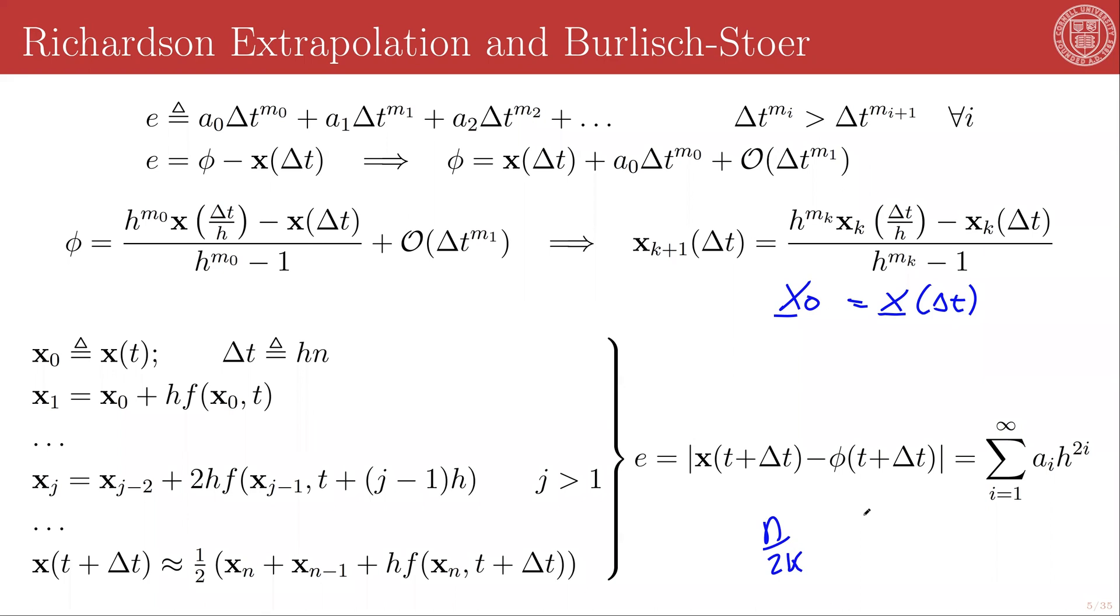Bulirsch-Stoer generalizes the averaging of the polynomial or rational function extrapolation of x evaluated at t + h/n. h/n is constant, and n increases. And we use this process of Richardson extrapolation to get an estimate of x evaluated as n goes to effectively infinity.